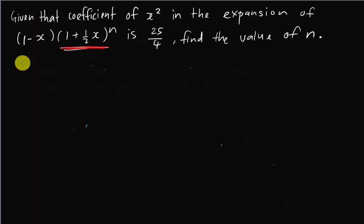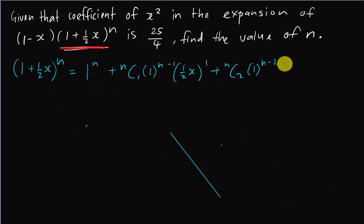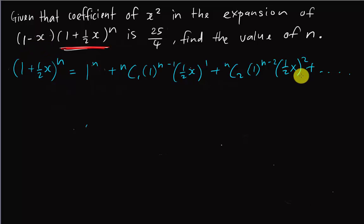So I'm going to expand (1 + ½x)^n first. The first term is 1^n, then plus nC1 times 1^(n-1) times (½x)^1, then plus nC2 times ... and so on. I will stop at the x² term because I want the coefficient of x² only. Multiplying by (1 - x) later, I can get x² from the x² term times 1, or from the x term times negative x.